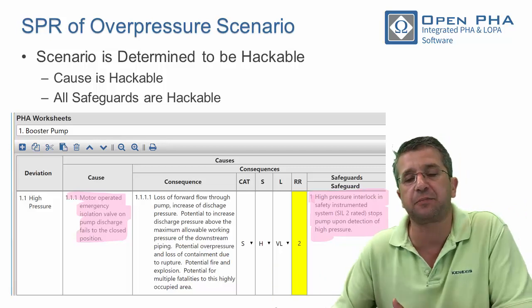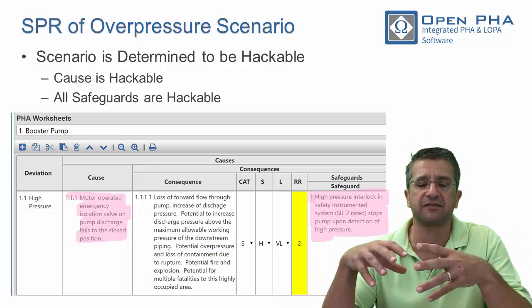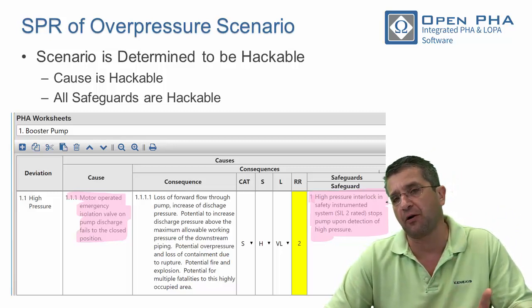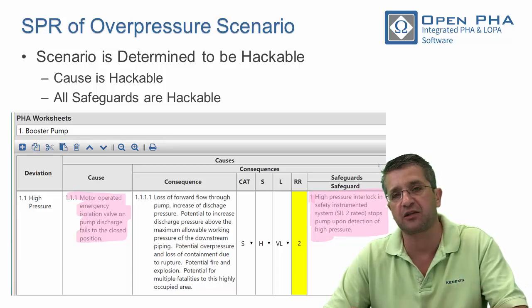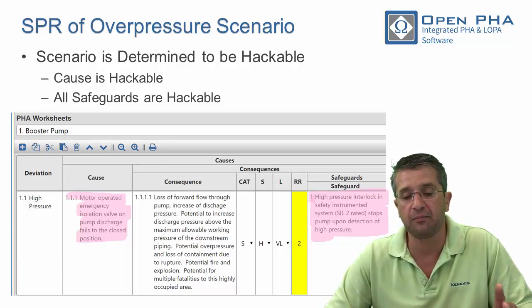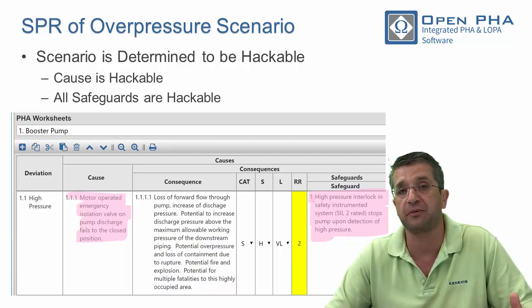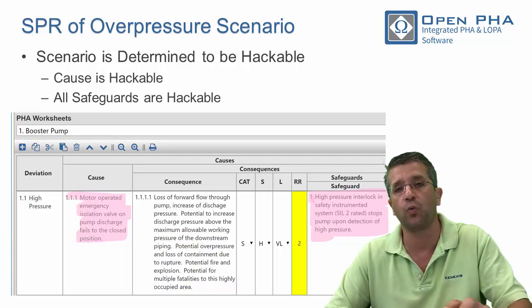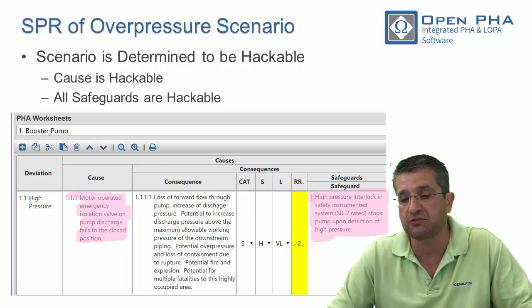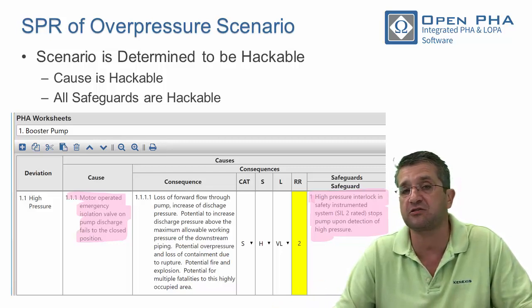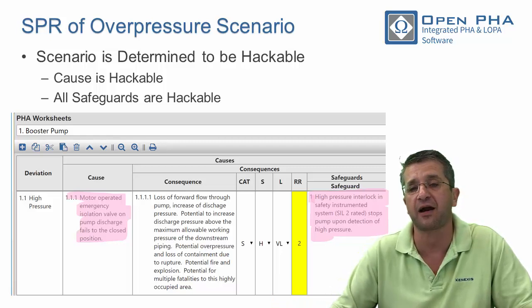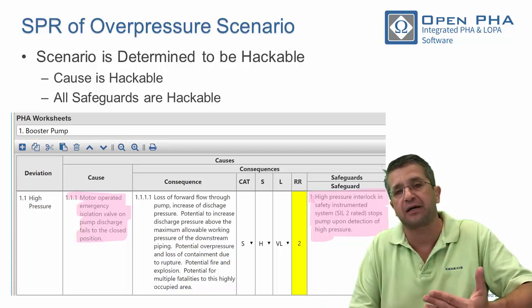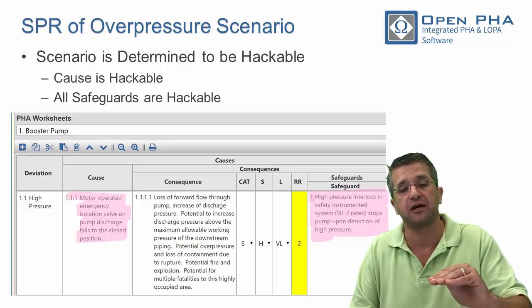Let's go back to the SPUR of the HAZOP scenario that caused the accident at the oil pumping station. The cause is hackable — a motor operated emergency isolation valve communicates through a distributed control system or safety instrumented system, which is a microprocessor-based device that can be hacked, so we can make the valves go closed. The safeguards are all in a SIL-2 rated safety instrumented system, which is also microprocessor-based and hackable. As a result, this entire scenario as currently designed is hackable, and a hacker can deliberately cause this situation to happen. It is of high concern.